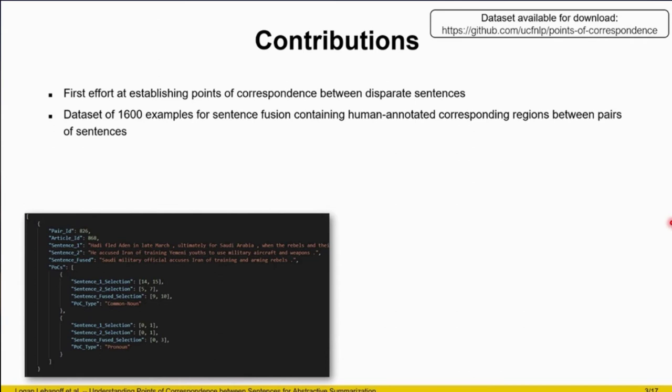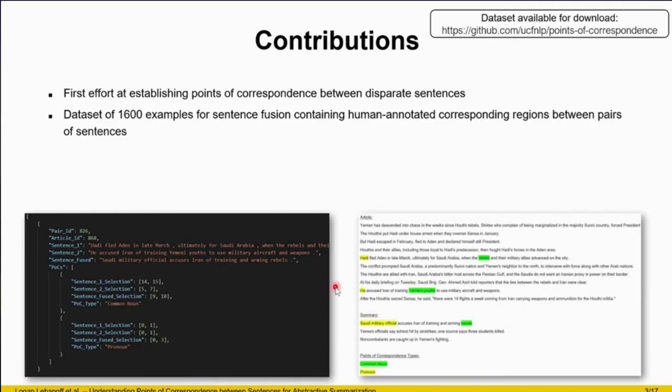Here's a quick look at what the dataset looks like. There's a link to the original news article, then the two input sentences and the corresponding fused sentence, and then a list of the points of correspondence between the sentences, which manifests as text segments within each sentence, and the point of correspondence type, which I'll go over soon. We also release a visualization of these points of correspondence within the original article, shown as highlighted regions with different colors for each point of correspondence. This is very important for summarization in that it helps us better understand how humans perform sentence fusion, giving us insights into how we can automate this process.